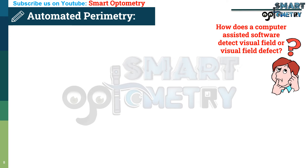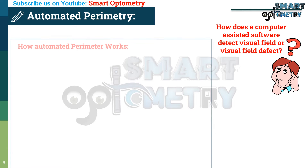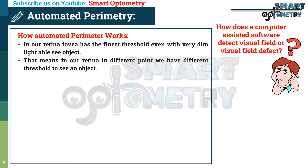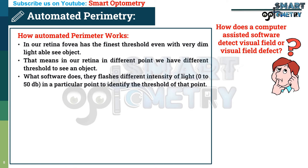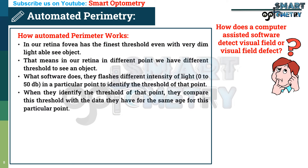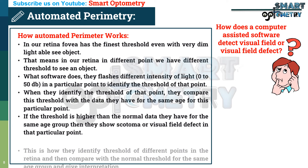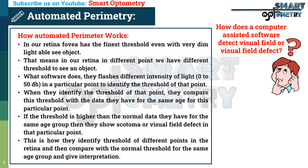How does computer-assisted software detect visual field or visual field defects? As we already know, the fovea has the finest threshold, able to see objects even with dim light, and threshold increases from the fovea to the periphery. That means different points in the retina have different thresholds. The software flashes different intensities of light at a particular point to identify the threshold of that point. It then compares this threshold with data for the same age group at that particular point. If the threshold is higher than the normal data for the same age group, it shows a scotoma or visual field defect at that point. This is how they identify thresholds at different retinal points, compare with normal age-group thresholds, and give an interpretation.